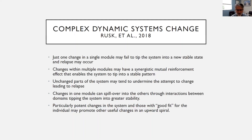How do you make changes in someone's complex dynamic system? Ruskin and colleagues in 2018 wrote about how complex system change works. One change in a single module may fail to tip the system into a new stable state. Changes within multiple modules can have a synergistic effect that tips the state into a stable pattern. Unchanged parts of the system may undermine the attempt to change, leading to relapse, while changes in one module can spill over into others, leading to greater stability.